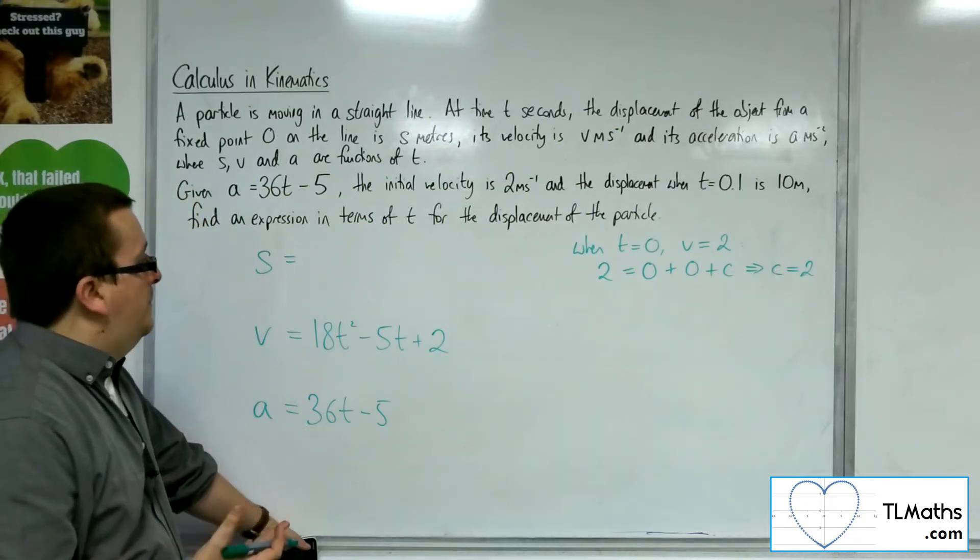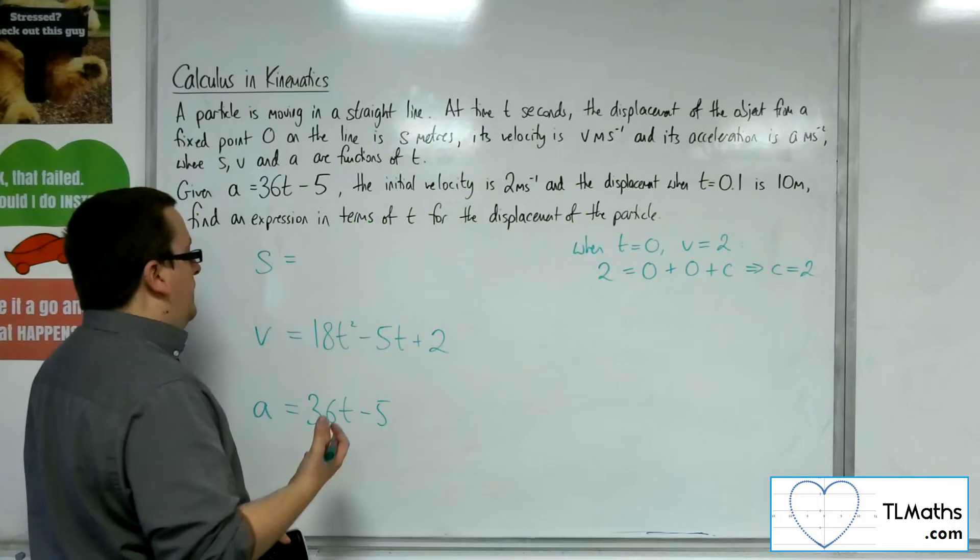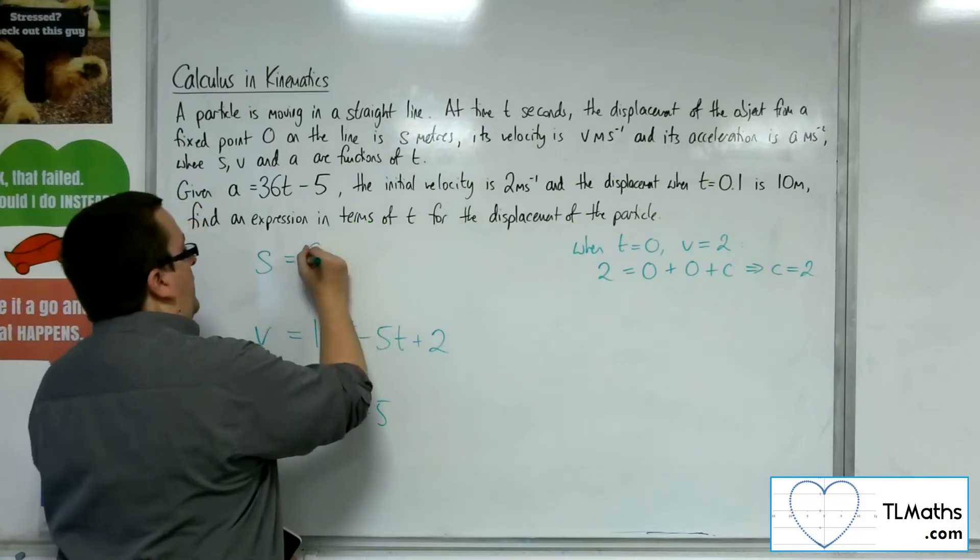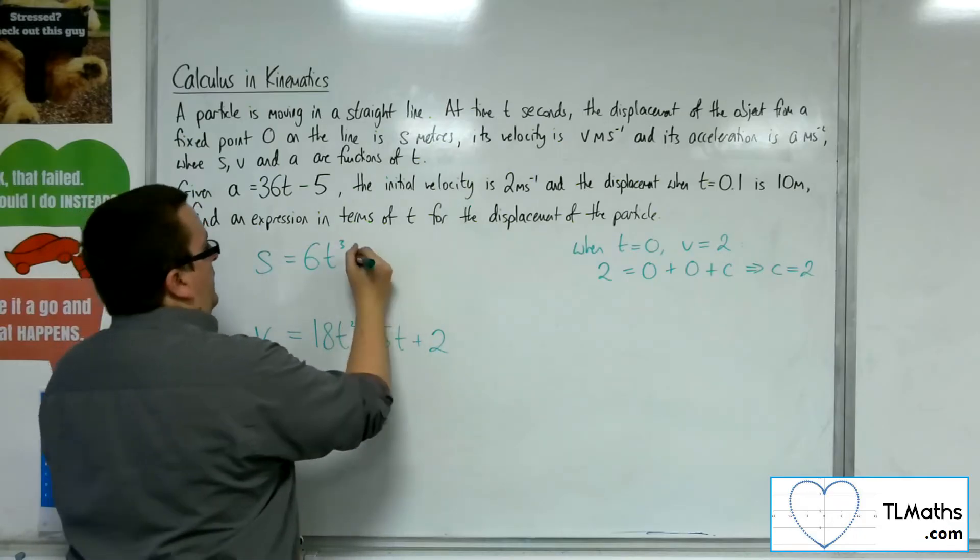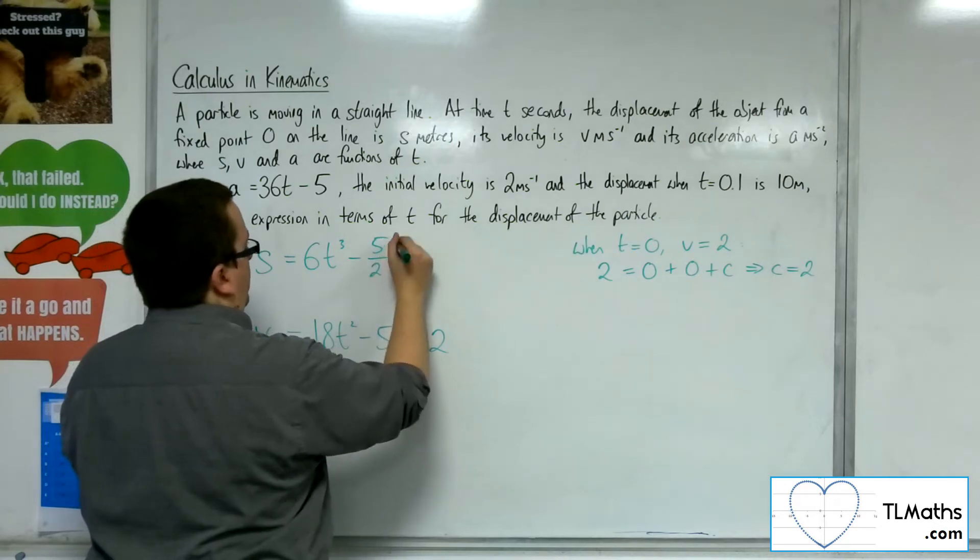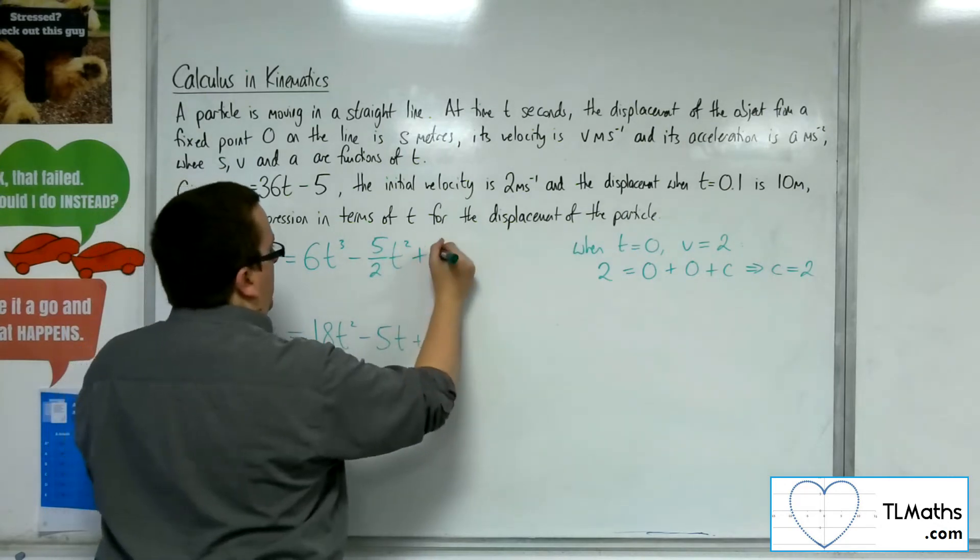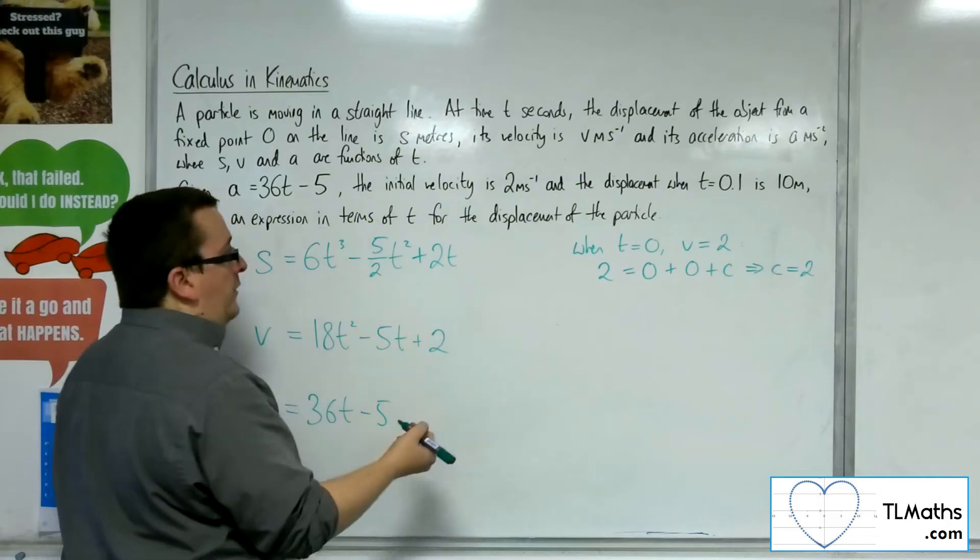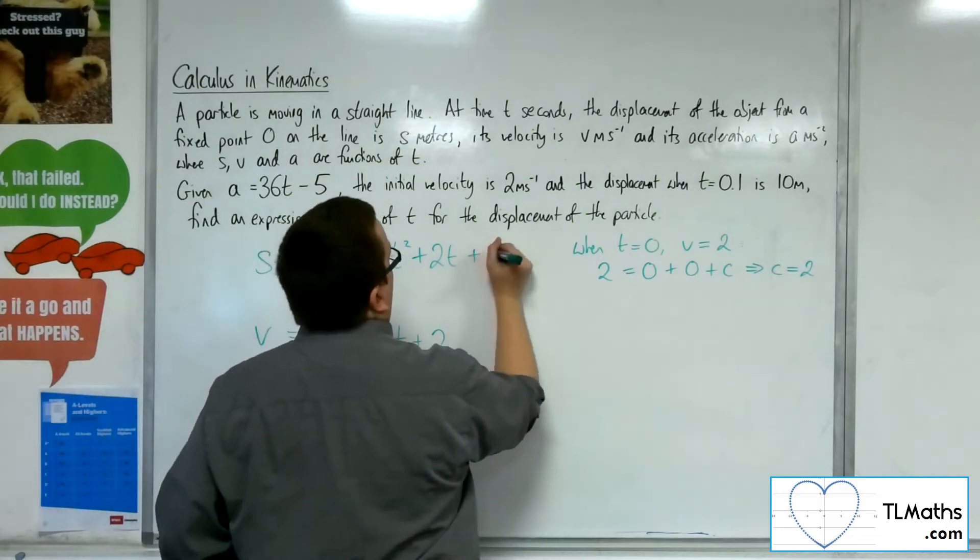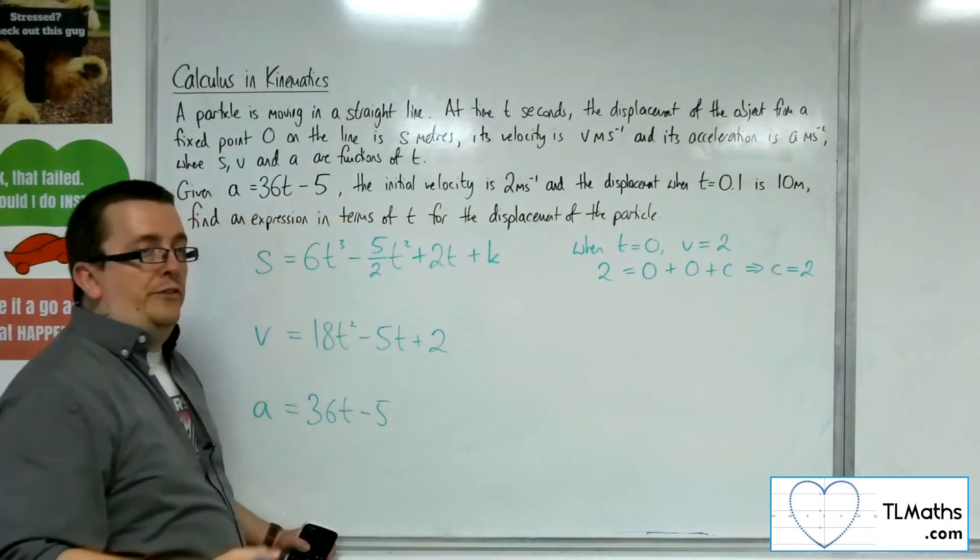Now to get the displacement, I'm going to have to integrate. So adding 1 to the power, dividing by the new power, I'm going to get 6t cubed take away 5 halves t squared plus 2t plus another constant. Now I've already used c, so I'm going to bring in k as my second constant.